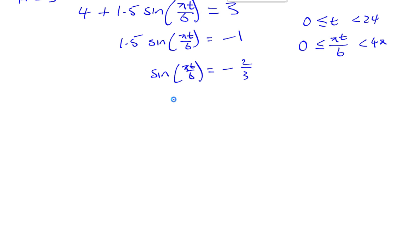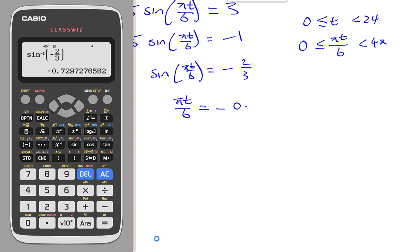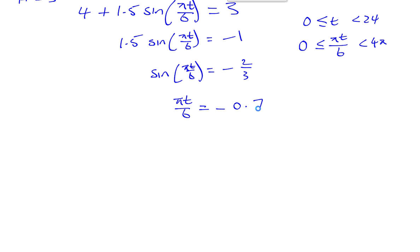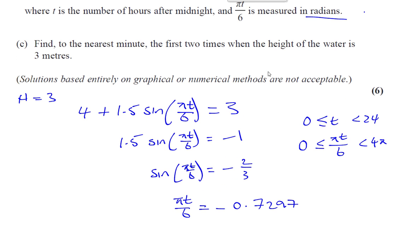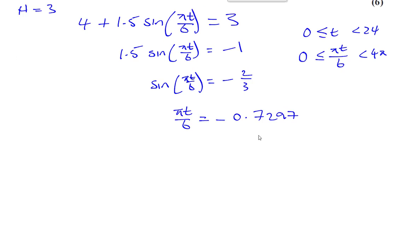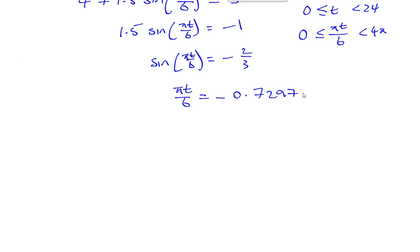So pi t over 6 equals negative 0.72977. That's one of the solutions. Now, this solution is not actually inside our range. This solution is outside of our range.